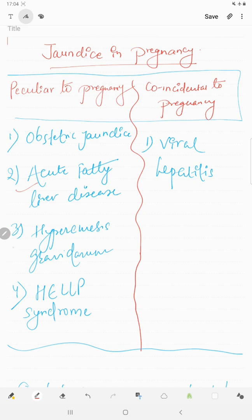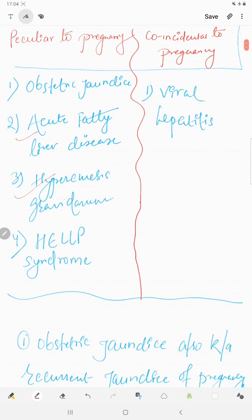However, there are some which are peculiar to pregnancy. They are obstetric cholestasis, acute fatty liver disease, hyperemesis gravidarum, and HELLP syndrome.